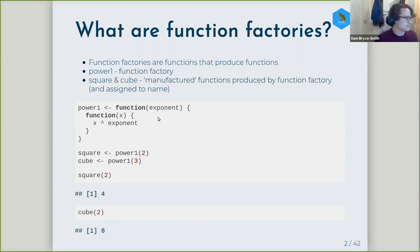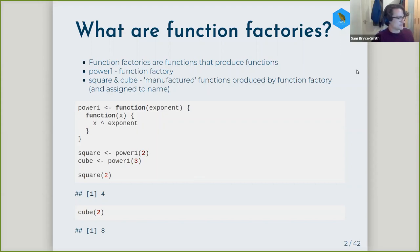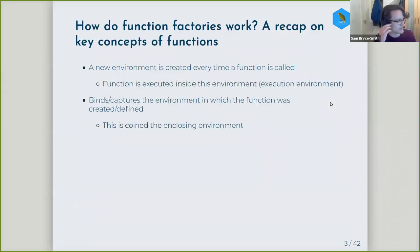To the function factory, you provide a value for exponent. And then when you call the function square or cube, your value will be raised to that power — for example, 2 to the power of 2. I think to understand how these are working, you need a quick reminder of some key concepts about how functions work, which helps understand how function factories are actually working.